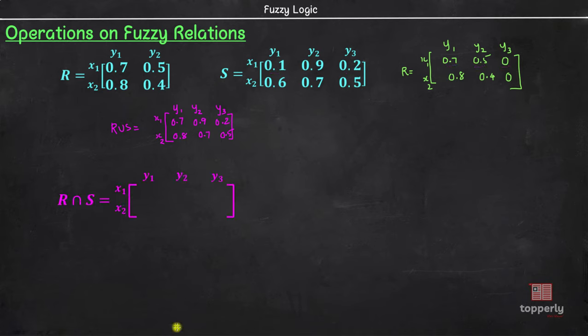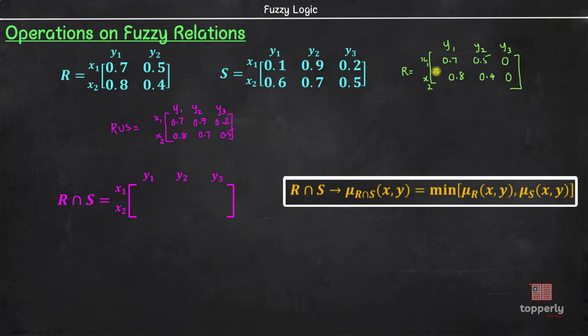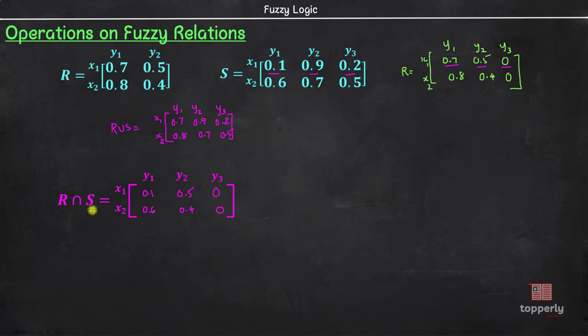Next, we have the intersection operation R intersection S for which the membership value of each ordered pair is given by the lowest of corresponding membership values in relations R and S. So, the membership value of ordered pair x1, y1 is given by the minimum of membership value 0.1 and 0.7 which is 0.1. Similarly, for x1, y2, we will consider the minimum of 0.9 and 0.5 which is 0.5 and for x1, y3, we have minimum of 0.2 and 0 which is 0 and we have 0.6 here, 0.4 here and 0 here. This matrix represents R intersection S.